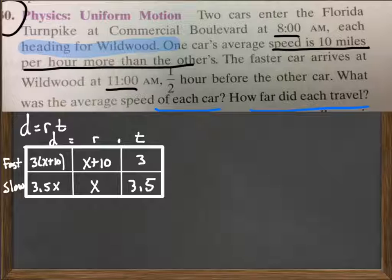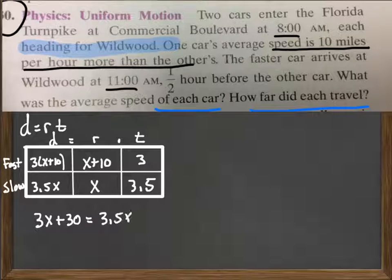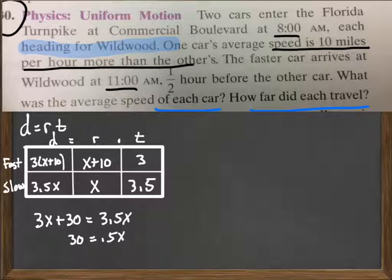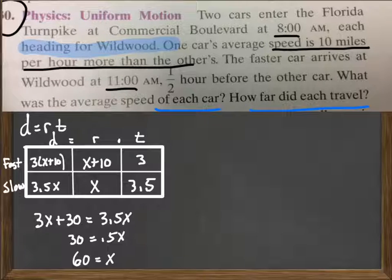Now, there is a little bit of information that we know. Both cars started at the same point. Both cars ended at the same point. So now we use that information to write our equation. 3x plus 30 equals 3.5x. And now we set about solving that equation. So we subtract 3x from both sides, get 30 equals 0.5x, and then divide by 0.5 to get that x equals 60.